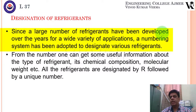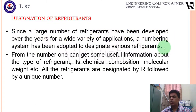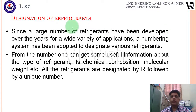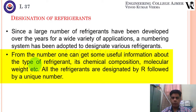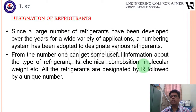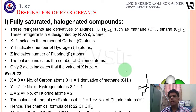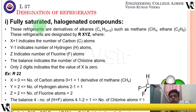Since a large number of refrigerants have been developed for a wide variety of applications, a numbering system has been adopted to designate them. From the number, one can get useful information about the type of refrigerant, its chemical composition, and molecular weight. All refrigerants are designated by R followed by a unique number. The most important category is fully saturated halogenated compounds, which are derivatives of alkanes.